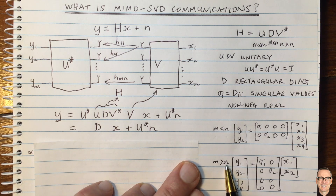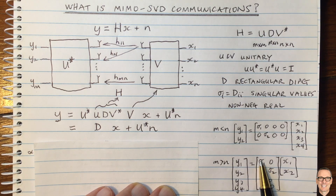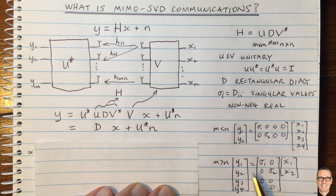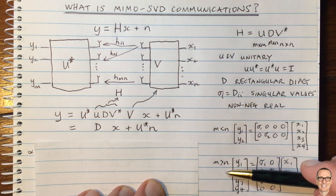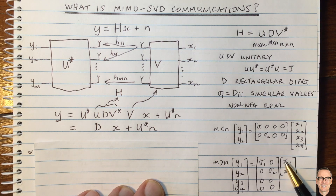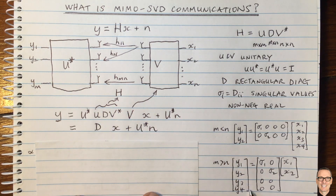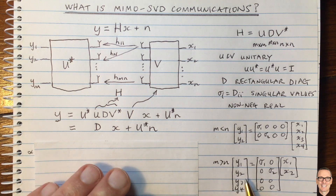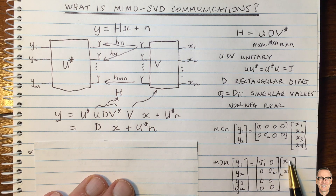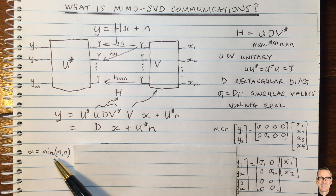In the case where M is greater than N — for example, 4×2 — the H matrix has the same singular values on the diagonal, but now we have four received values in Y and only two transmit antennas, so only two data streams. The last two received values Y3 and Y4 will be zero — nothing comes out there except noise. So really we only have the number of channels which is the minimum of M and N, which we call alpha.